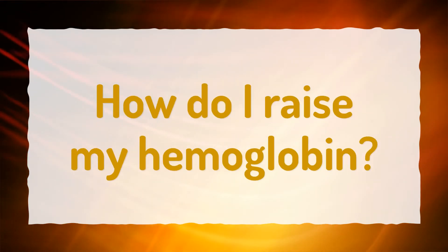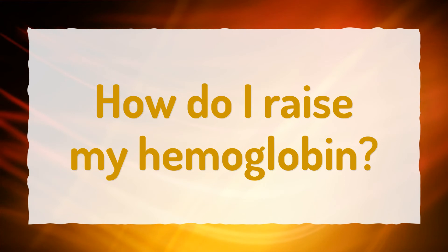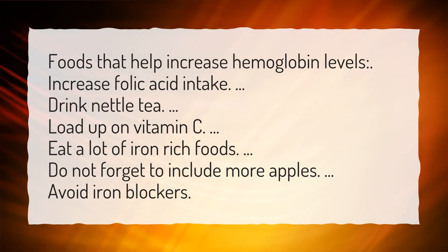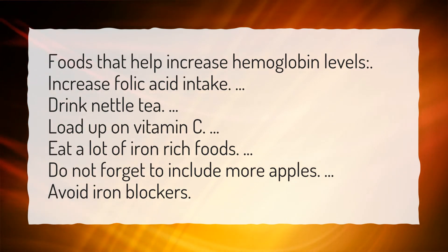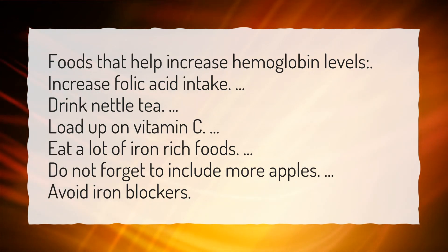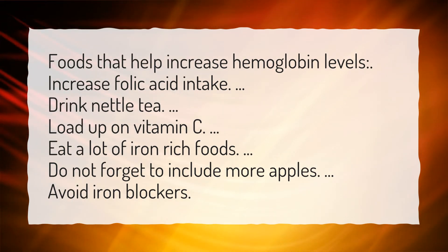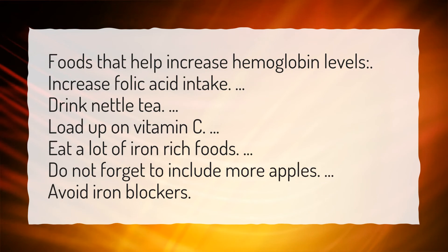How do I raise my hemoglobin? Foods that help increase hemoglobin levels: increase folic acid intake, drink nettle tea, load up on vitamin C, eat a lot of iron-rich foods, do not forget to include more apples, and avoid iron blockers.